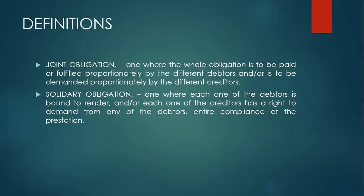Definitions. Joint obligation is one where the whole obligation is to be paid or fulfilled proportionately by the different debtors, and/or is to be demanded proportionately by the different creditors. Take note of the word proportionately. Solidary obligation is one where each one of the debtors is bound to render, and/or each one of the creditors has a right to demand from any of the debtors entire compliance of the prestation.